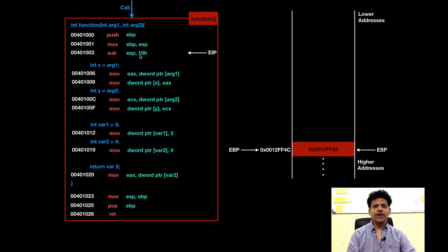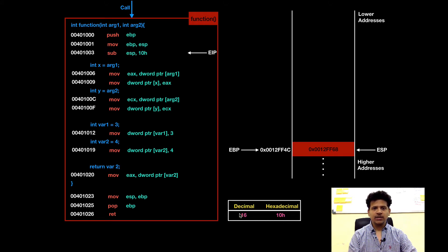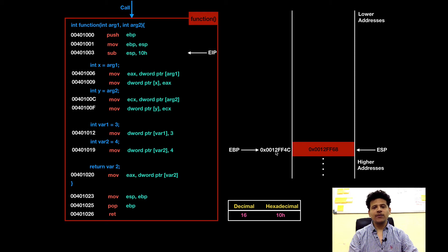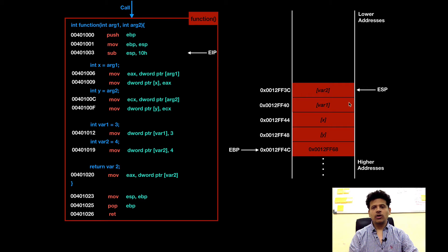The next instruction is subtract 10 (hex) from ESP. As we can see, our function has 4 variables: Integer x, Integer y, Integer r1, Integer r2. The function needs to reserve space onto the stack. The decimal value of 0x10 is 16. We need to allocate 16 bytes onto the stack because each integer variable needs 4 bytes. For that, we subtract 10 (hex) from ESP. Currently, ESP is 0012554C. Let's execute that. Space got allocated for 4 variables onto the stack.